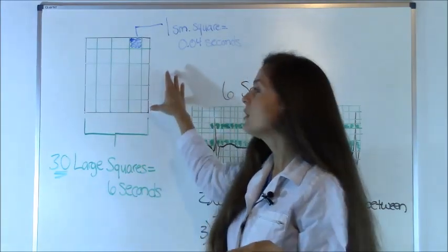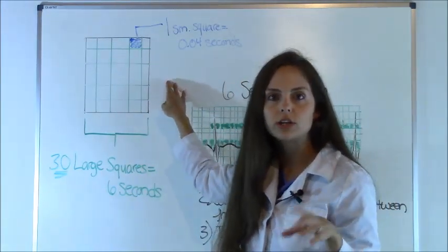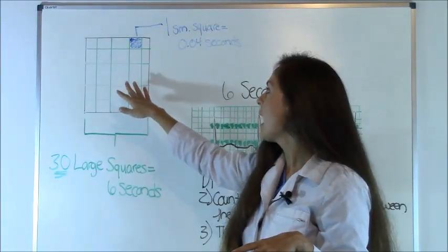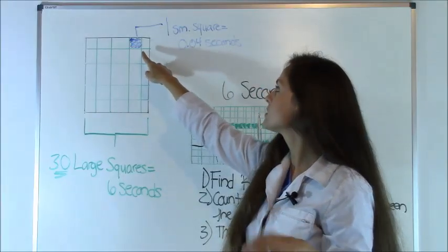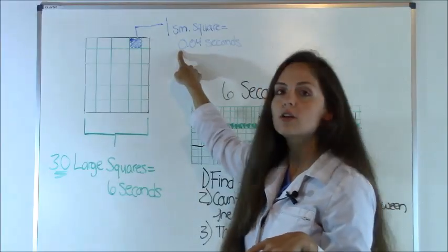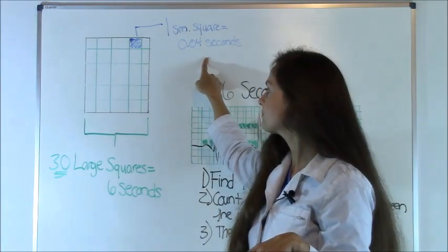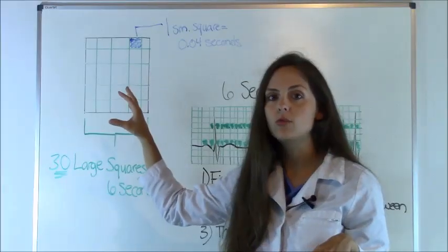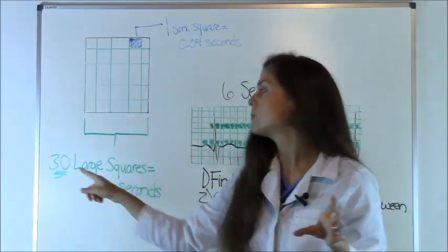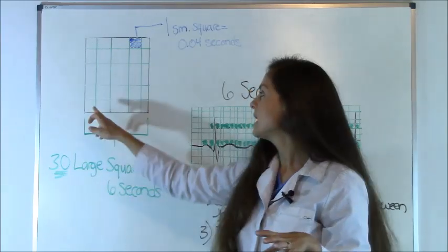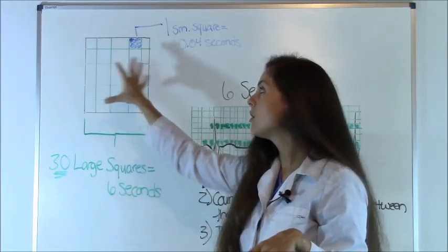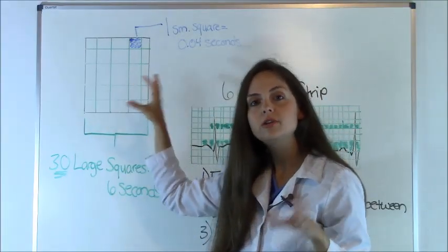And behind me, I have a blown up version of what one of those large squares look like. You have a large square and inside that large square, you have small squares. Each small square represents a little fraction of time. One small square represents 0.04 seconds of time. And whenever you count up for your 6 second rule, you'll be counting these large squares. So 30 large squares equals 6 seconds because 5 small squares equals 0.20 seconds.